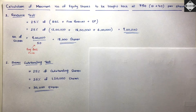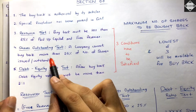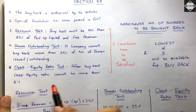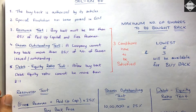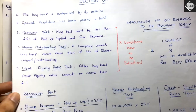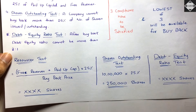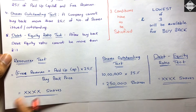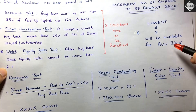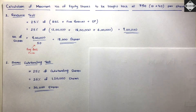We have three tests: the Resource Test, the Shares Outstanding Test, and the Debt-Equity Ratio Test. After doing all three tests, you get a number of shares from each, and the lowest of these three will be the maximum number of shares you can buy back.